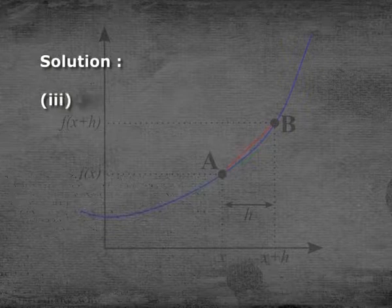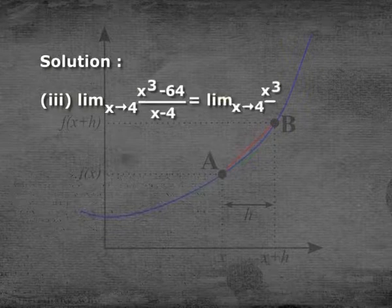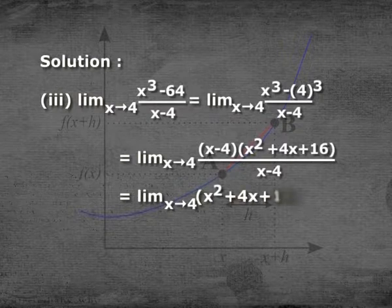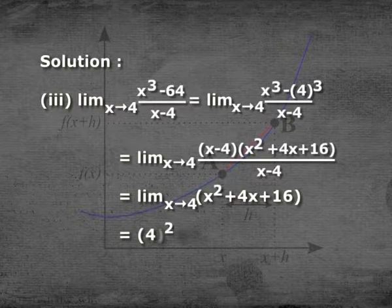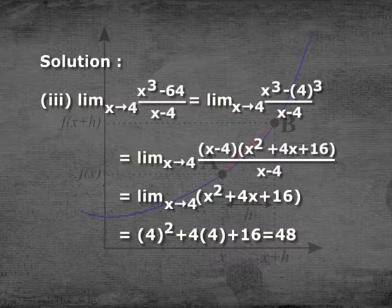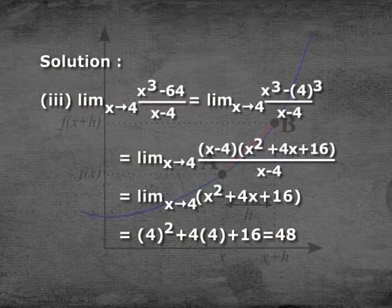Third: limit x→4 of (x³ − 64)/(x − 4). This equals limit x→4 of (x³ − 4³)/(x − 4). Factoring the numerator: limit x→4 of [(x−4)(x² + 4x + 16)] / (x−4), which simplifies to limit x→4 of (x² + 4x + 16) = 4² + 4×4 + 16 = 16 + 16 + 16 = 48.